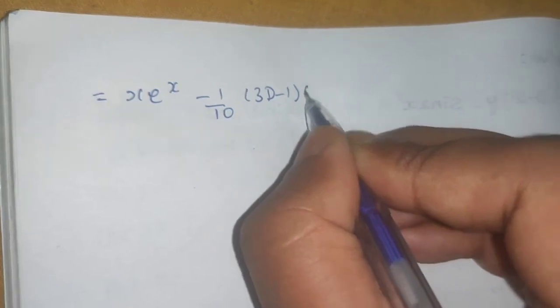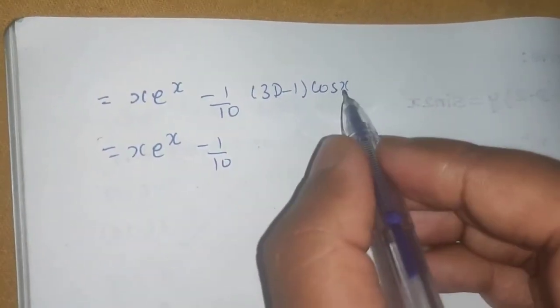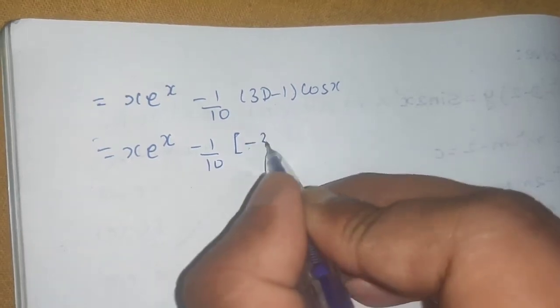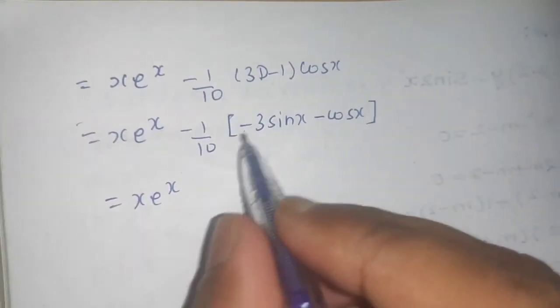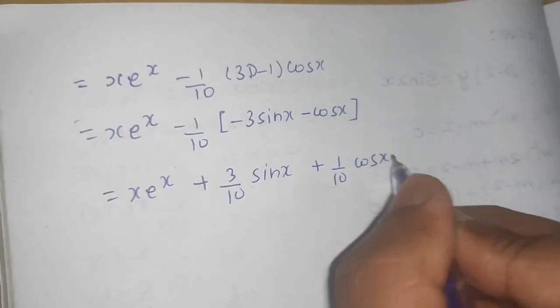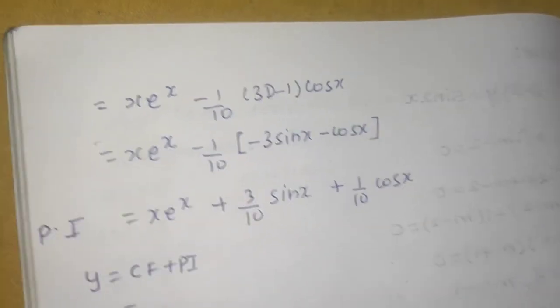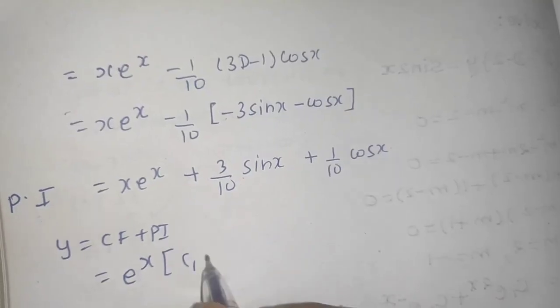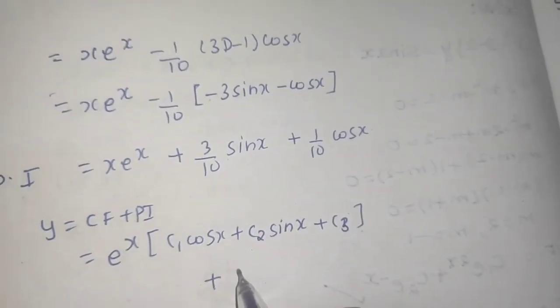Continuing: xe^x + (−1/10)(3D + 1) operating on cos x. Operating 3D on cos x gives −3sin x, and 1 on cos x gives cos x. So PI = xe^x − (1/10)(−3sin x + cos x) = xe^x + (3/10)sin x − (1/10)cos x. The general solution is CF + PI.